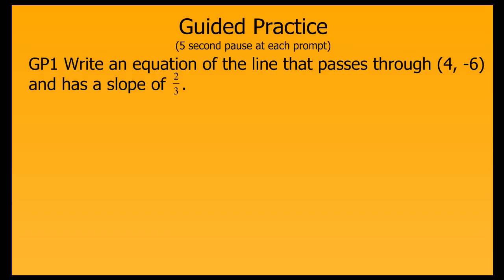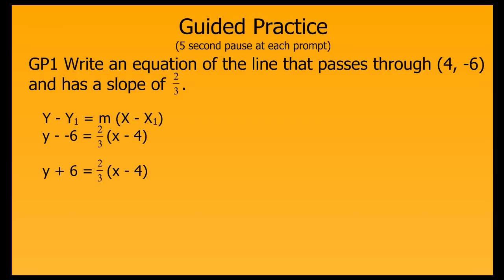For this problem, our first question is: what are we trying to do here? What we're trying to do is write an equation for this line, given one point and the slope. Next question is: how do we do that? First, we recall the point-slope form of a linear equation: y minus y1 equals m times the quantity x minus x1. Now we simply substitute in our slope 2 thirds for m, negative 6 for y1, and 4 for x1. Are we finished? Not quite. We can simplify a little bit to make it y plus 6 on the left side. Now we're done because the equation is in point-slope form.